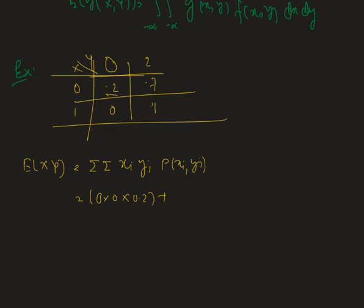Now for (0,2) we have the joint PMF as 0.7. For (1,0) we have the PMF 0, and for (1,2) we have the PMF 0.1.